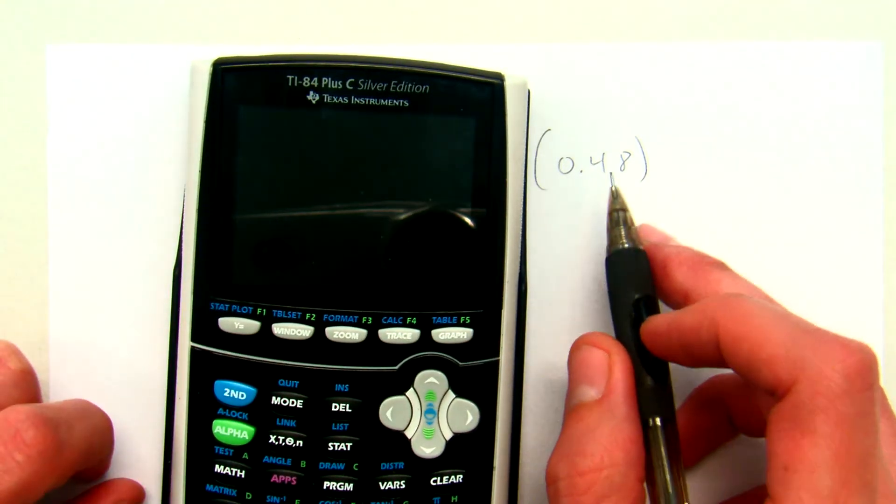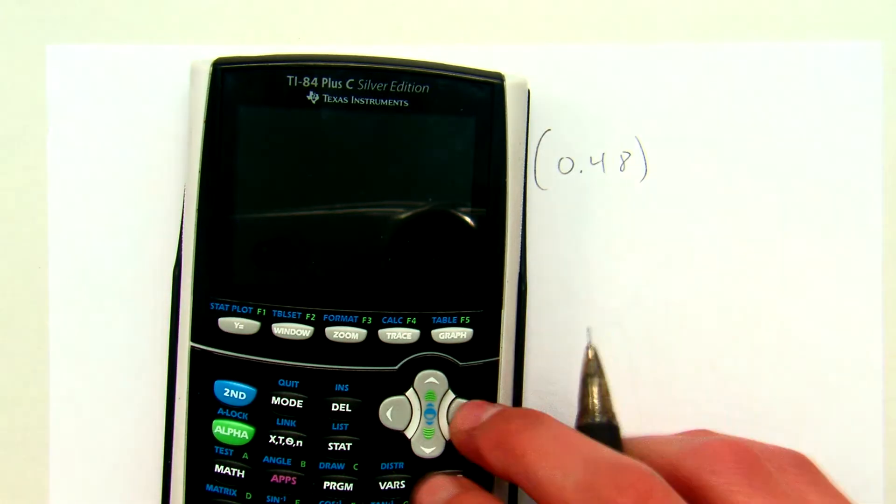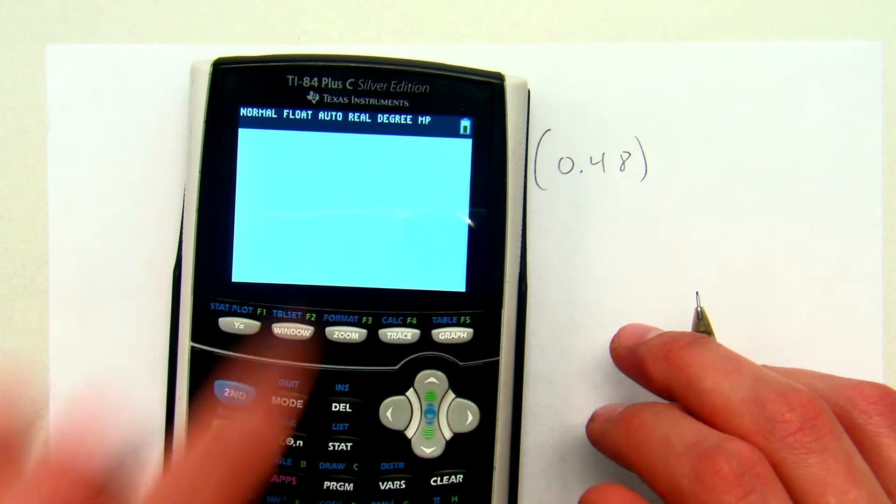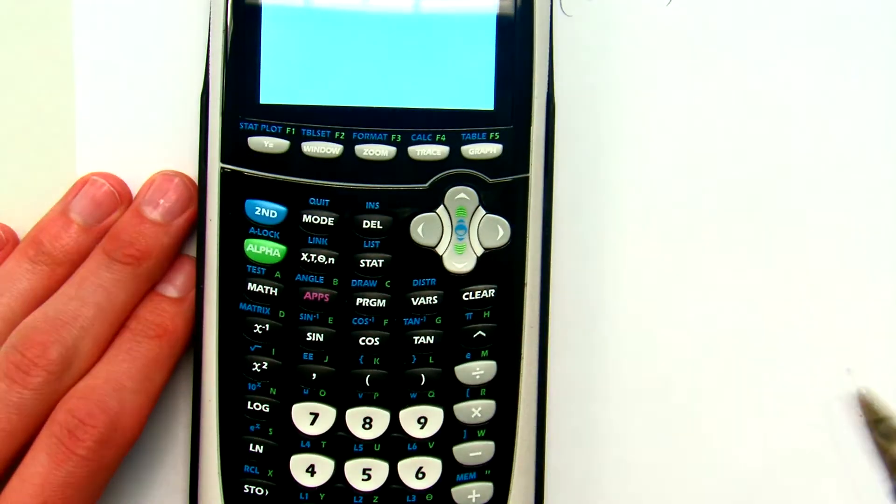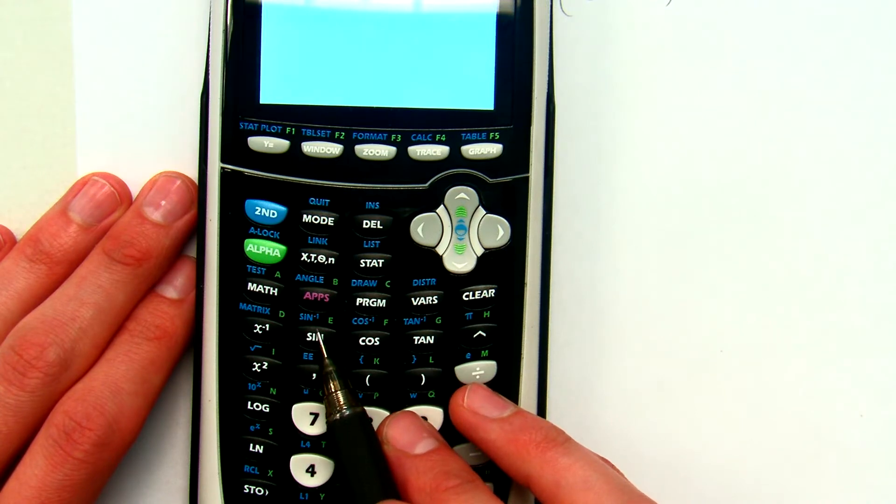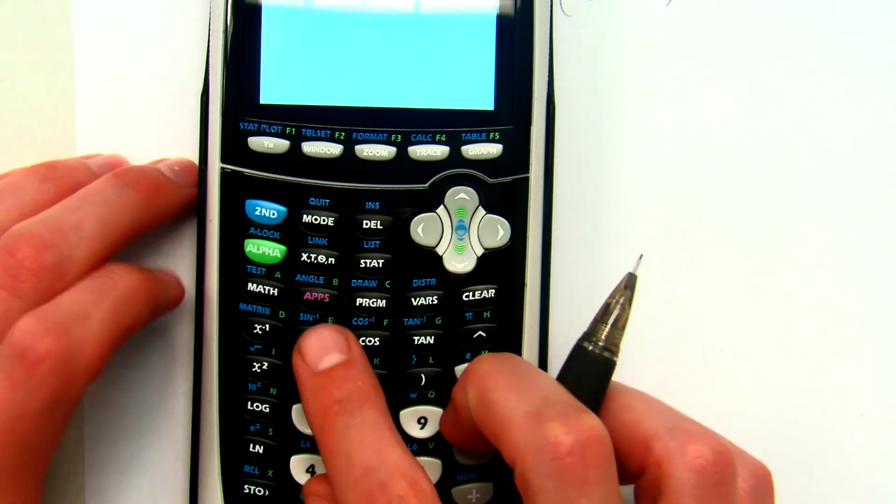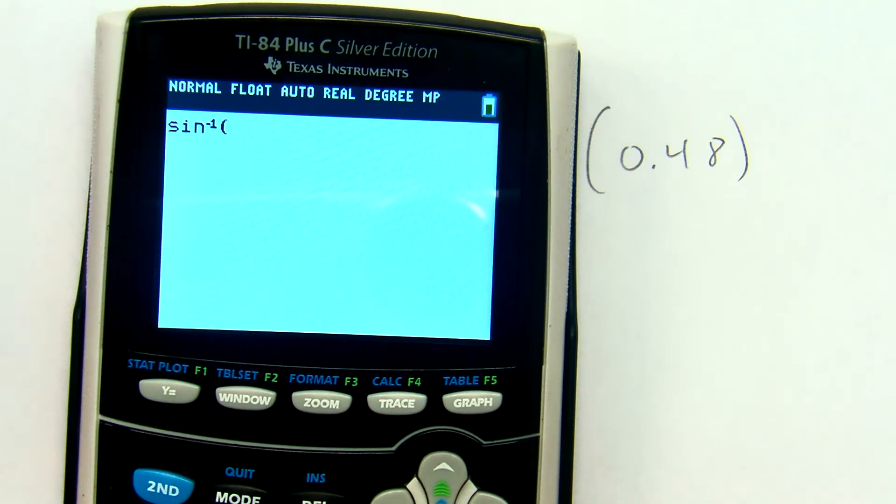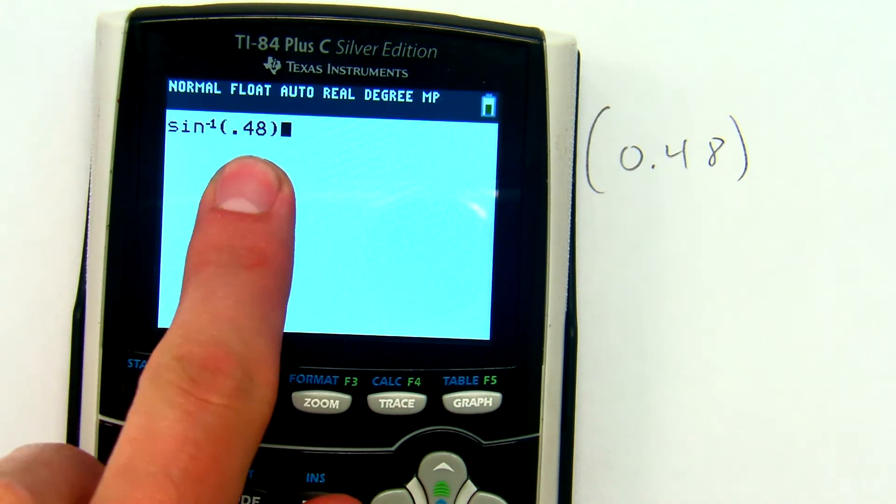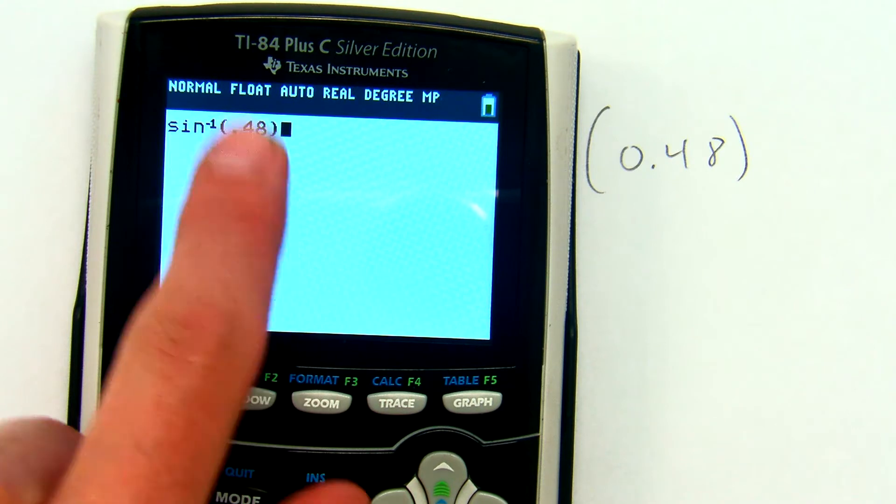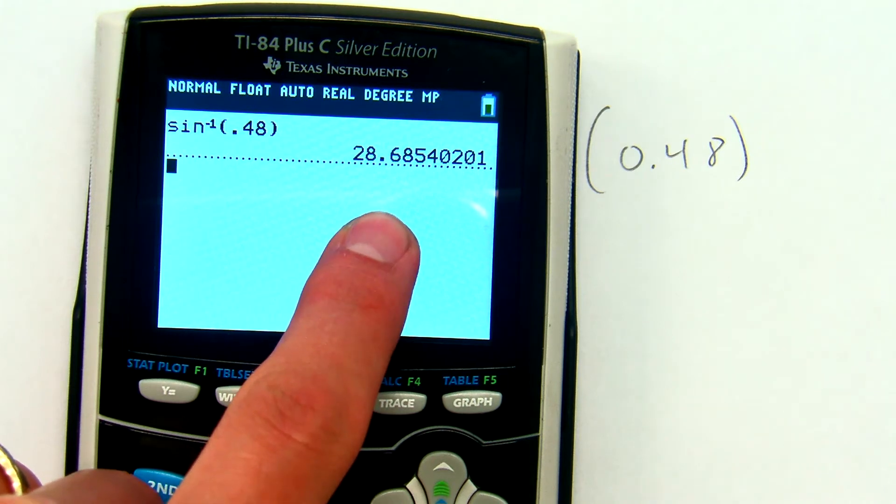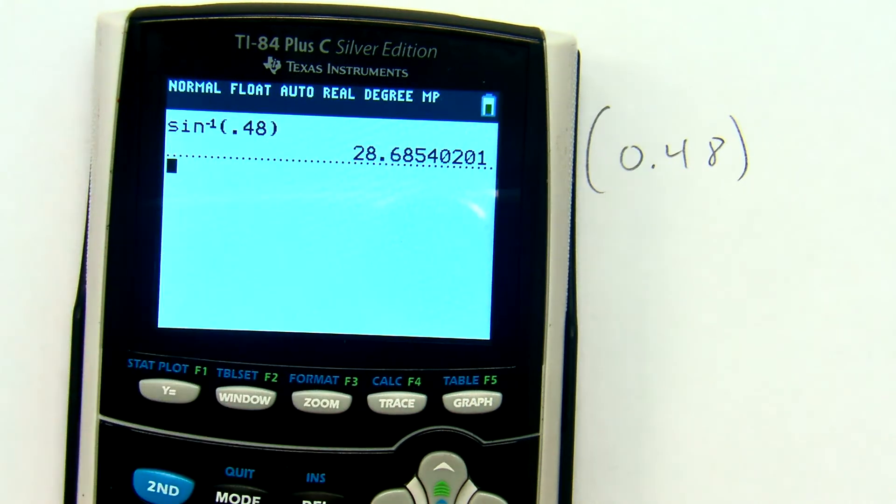We're going to give our answer in both degrees and radians. When I turn my calculator on, I can see that I'm in degree mode right now. I'll find the inverse sine button. Here's sine. Inverse sine is just above it, so second sine gives me inverse sine. I want to calculate inverse sine of 0.48. Remember I'm in degrees, so the answer I'm about to get is going to be the angle measure in degrees. My calculator is telling me that sine of 28.685 degrees is equal to 0.48.